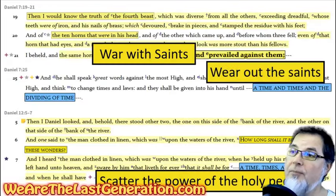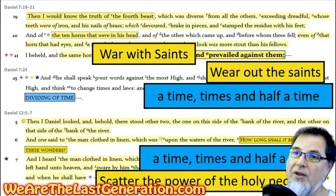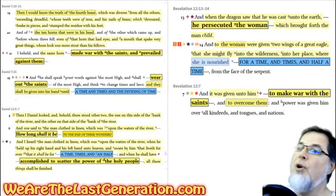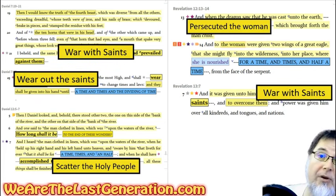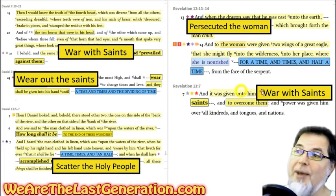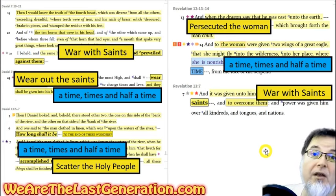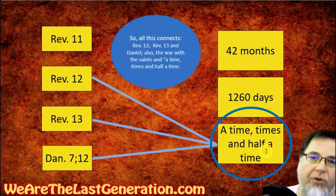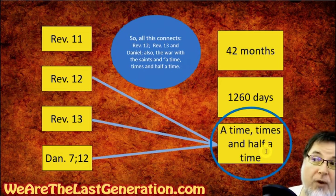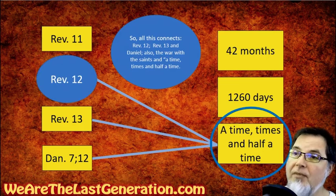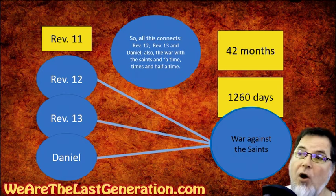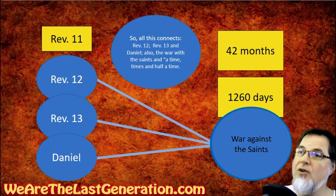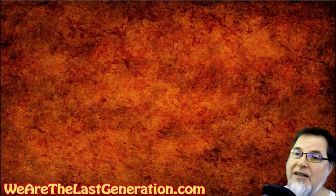Here's the book of Daniel: war with the saints, wear out the saints, a time, times, and half a time. Here's the book of Revelation: war, war, war — a time, times, and half a time. Daniel on the left, Revelation on the right, side by side — all the persecution scriptures. Is this the same time period or different? Of course it's the same. Revelation 12, Revelation 13, Daniel 7, Daniel 12 — all connect to a time, times, and half a time. Revelation 12, 13, and Daniel all talk about a war with the saints. That's where we're at today: the connections in part one.